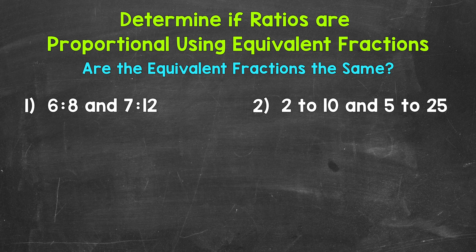This is just like renaming fractions with a common denominator — the same exact steps, we are just working with ratios. We'll start by rewriting 6 to 8 and 7 to 12 in fractional form. Now we need to find the least common multiple between those bottom terms, 8 and 12. When it comes to multiples, think multiply or skip count.